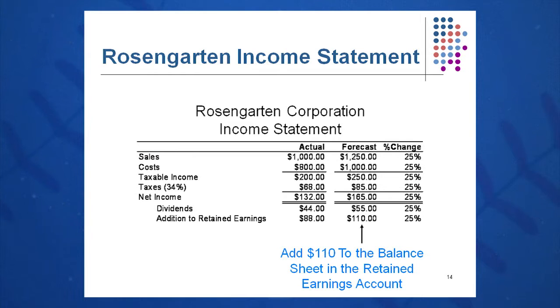Last year, taxable income was 20% of sales. This year, taxable income will be 20% of sales, so I take 20% of $1,250 and get $250. Another way to calculate that would be to take last year's $200 of taxable income and multiply by 1.25 to also get $250 — just a different way of calculating.